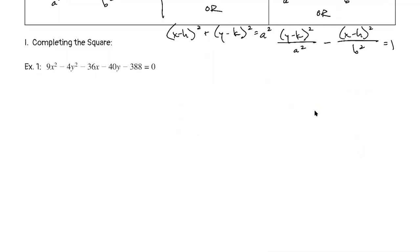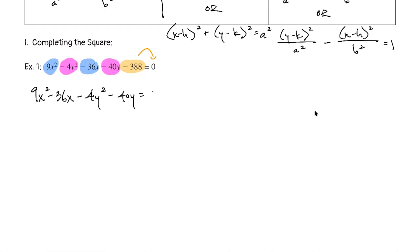For completing the square, we start the same way: gather all the x terms including the signs in front, gather all the y terms including the signs, and move any constants to the other side. So our first line reads: 9x² − 36x − 4y² − 40y = 388.